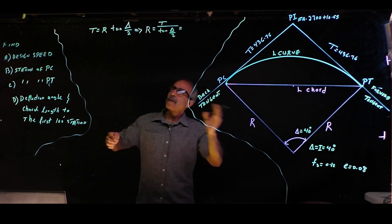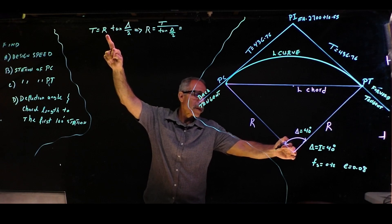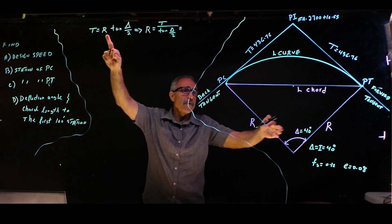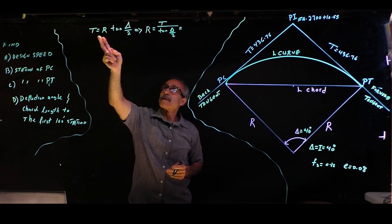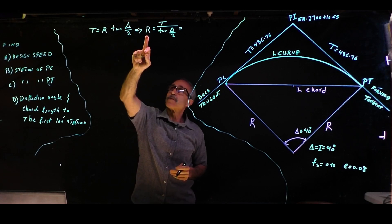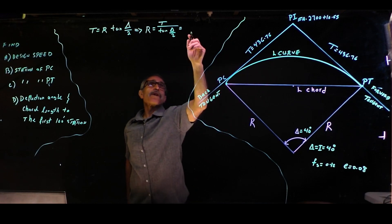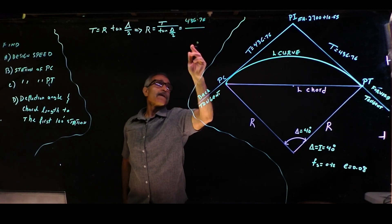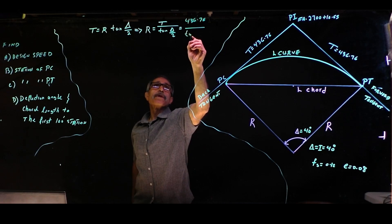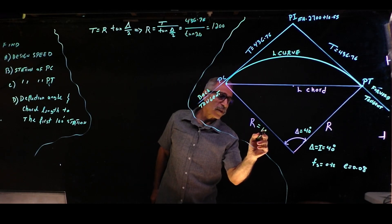Looking at the PowerPoint, we know the tangent equals radius times the tangent of delta divided by 2. We can rearrange this to find radius: radius equals T divided by tangent of (delta/2). Our T is 436.76, divided by tangent of 20 degrees (which is 40 divided by 2), and that gives us a radius of approximately 1200 feet.